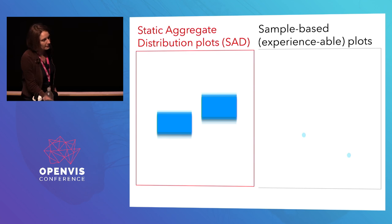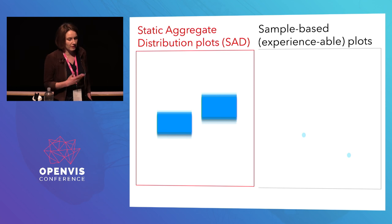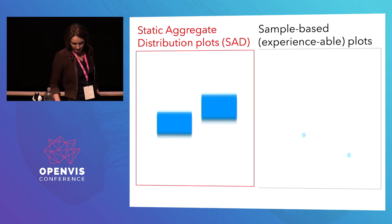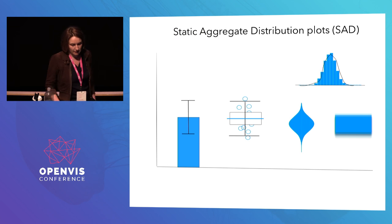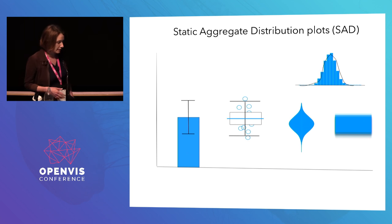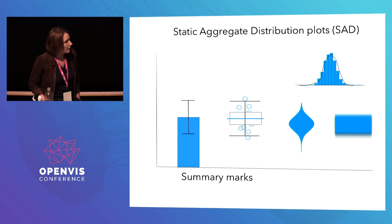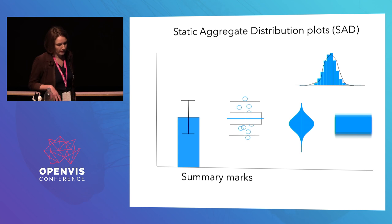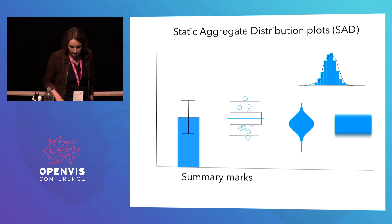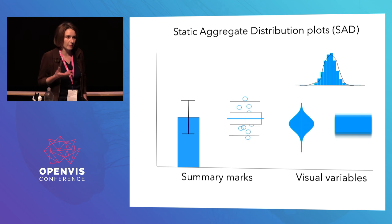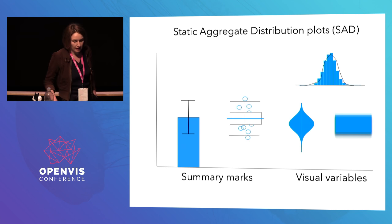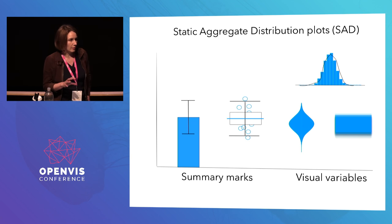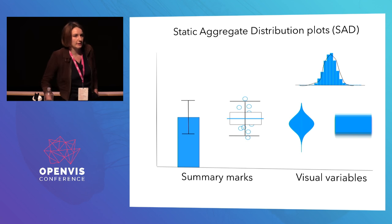On one hand we have static plots like error bars, violin plots to show probability distributions, and gradient plots that map probability to opacity — I call these static aggregate distribution plots, or SAD plots. On the other hand, we occasionally see sample-based or experienceable uncertainty visualizations, closer to Galton's board, where we're actually showing people data with focus on one observation or sample at a time. These can build up to depict the overall probability distribution, but through a very different technique.